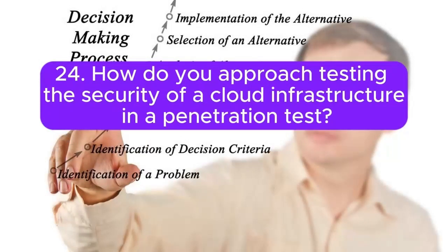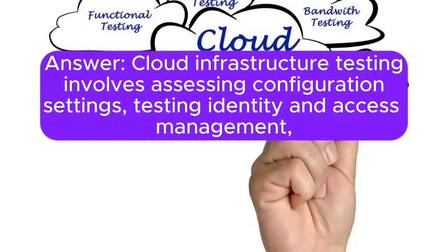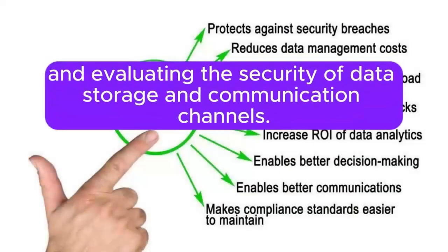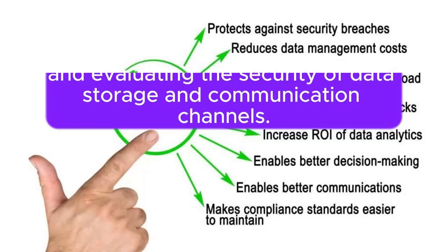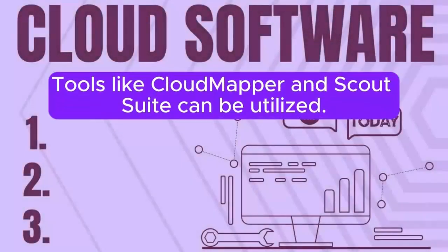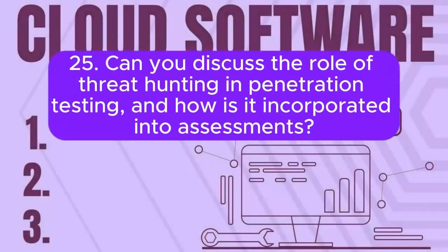Question 24: How do you approach testing the security of a cloud infrastructure in a penetration test? Answer: Cloud infrastructure testing involves assessing configuration settings, testing identity and access management, and evaluating the security of data storage and communication channels. Tools like CloudMapper and ScoutSuite can be utilized.